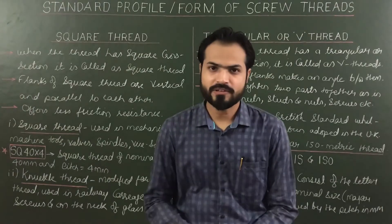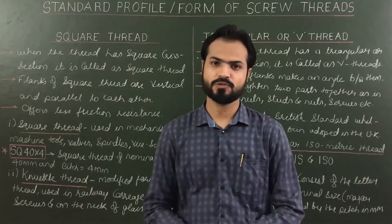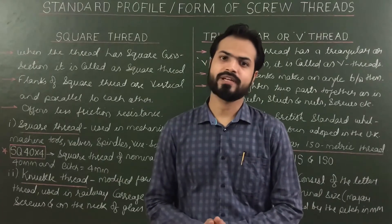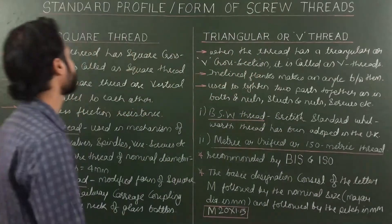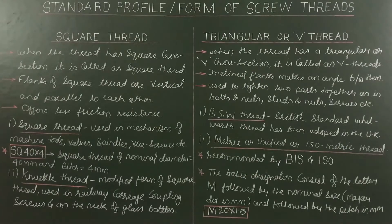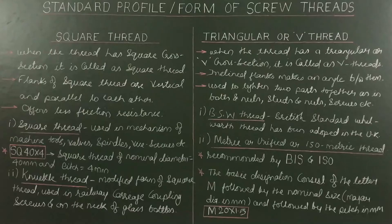Hello everyone. After introduction and terminology of screw threads, let's see various types of profiles or various forms of screw threads. The two main forms of screw threads are square thread and triangular or V thread. First, square thread: when the thread has a square cross-section, it is called a square thread.